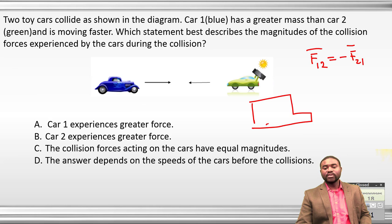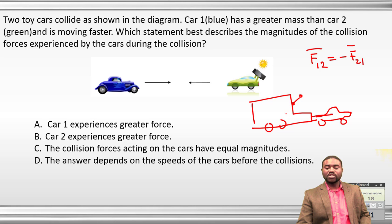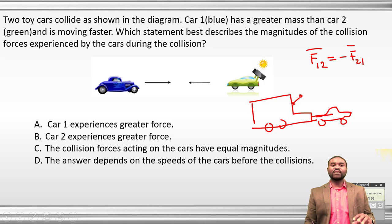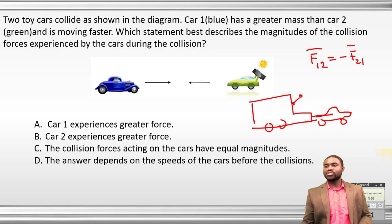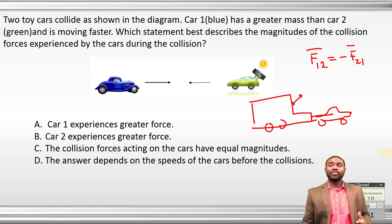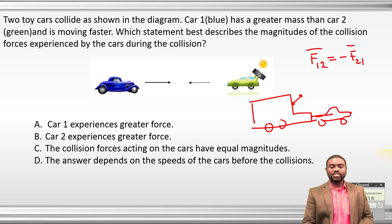If a truck collides with a little sedan, or even if a truck collides with a bulk, the force that the truck asserts on the bulk will be equal to the force that the bulk asserts on the truck. That's Newton's third law of motion. But intuitively, the little car gets more destroyed than the truck, and people think the force on the little car is greater — but it's not. Based on Newton's third law, the answer is C. It does not depend on the speeds of the cars just before collision.